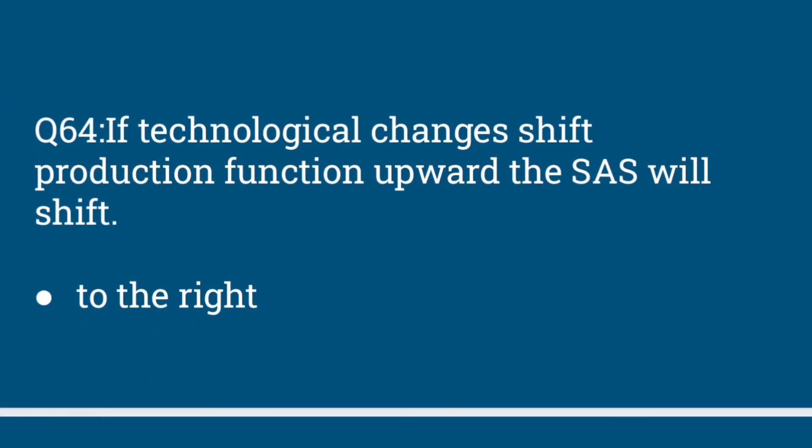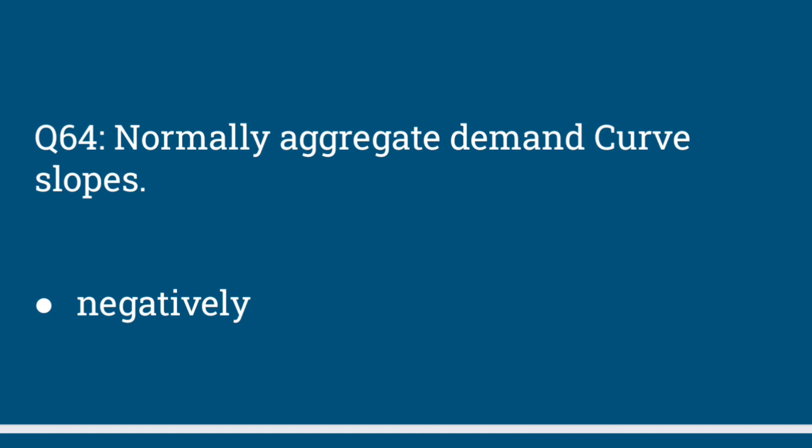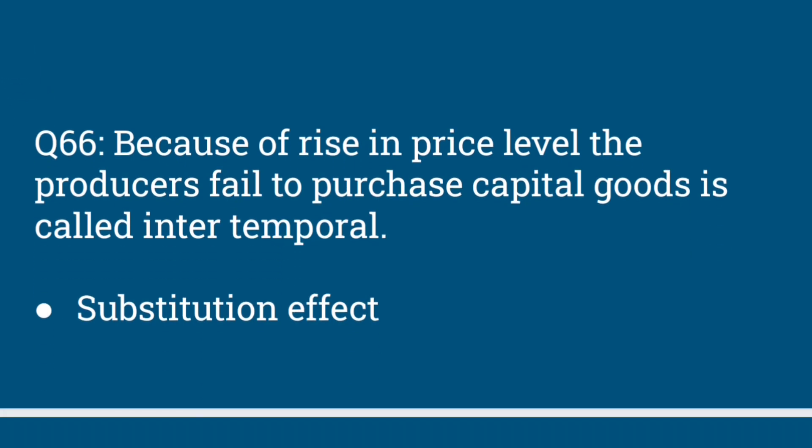If technological changes shift the production function upward, the short-run aggregate supply will shift to the right. Normally, the aggregate demand curve slopes negatively. Because of a rise in the price level, producers fail to purchase capital goods — this is called the intertemporal substitution effect.